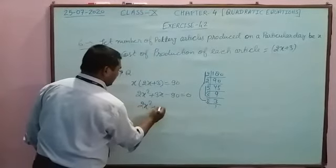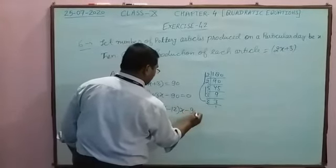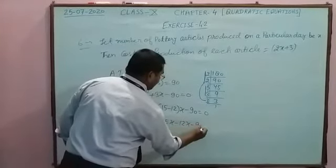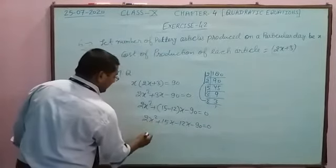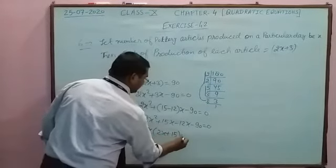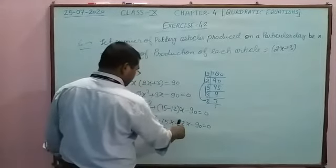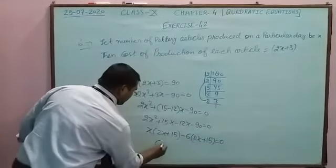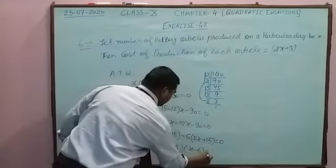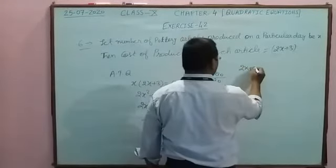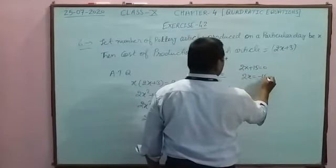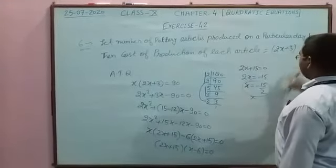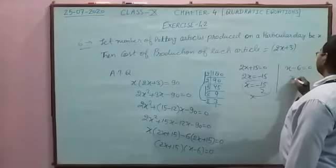Factoring 2x² + 15x − 12x − 90 = 0, we take common factors: x(2x + 15) − 6(2x + 15) = 0, so (2x + 15)(x − 6) = 0. This gives x = 6 or x = −15/2. Since x must be positive, x = 6.